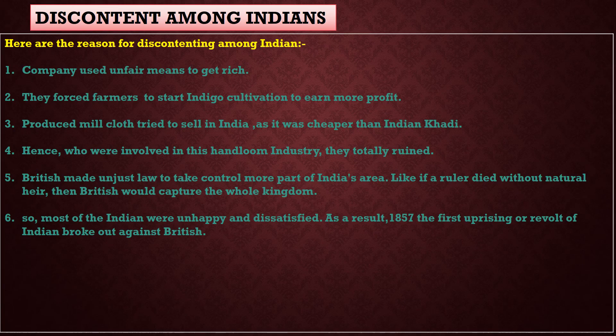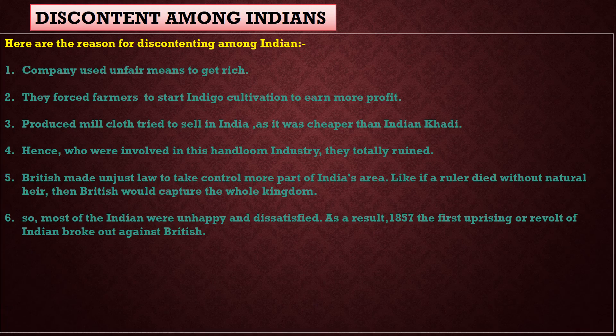Indians became very unhappy and dissatisfied. There were several reasons: point one, the company used unfair and illegal means to get rich through trading to earn more profit. Point two, they forced farmers — since Bengal was under British control — to start indigo cultivation to earn more money. But where you start indigo cultivation, for 10 to 15 years you cannot cultivate any other food crops. So farmers became poorer and were suffering without food.